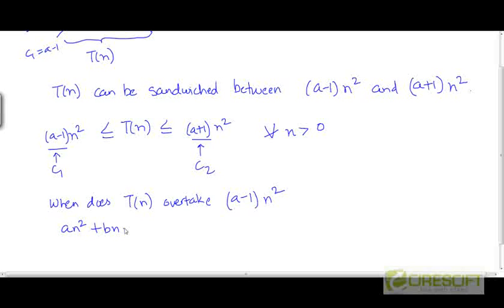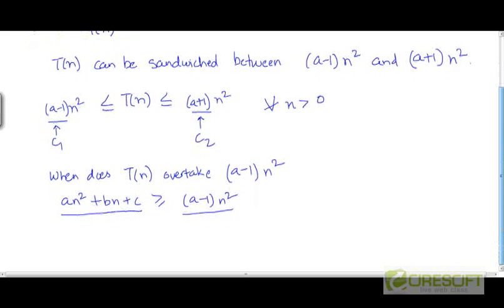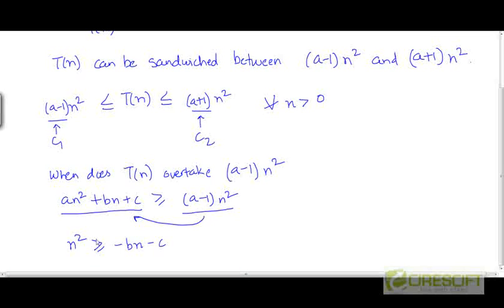In other words, when is a n squared plus b n plus c greater than or equal to a minus 1 times n squared? We are trying to find the threshold value beyond which t of n is above the curve for a minus 1 times n squared. If we bring this term to the left hand side and combine it with a n squared, so a n squared minus a minus 1 times n squared gives n squared. So we find out when n squared is greater than or equal to minus b n minus c.